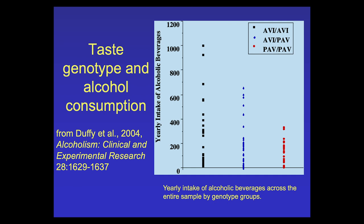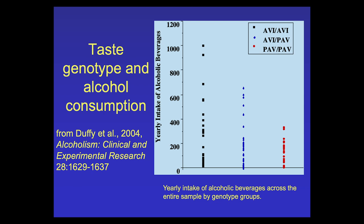Everybody remembers the little paper strips that we tested. And some people said 'yuck, it's bitter.' Other people said there was no taste whatsoever. It turns out that at TAS2R38, there is a very common variant. The form with three amino acid substitutions — represented here by red — means individuals with that genotype drink much less ethanol than do people without that genotype. Being able to detect bitter substances apparently also makes ethanol seem bitter and unpleasant.